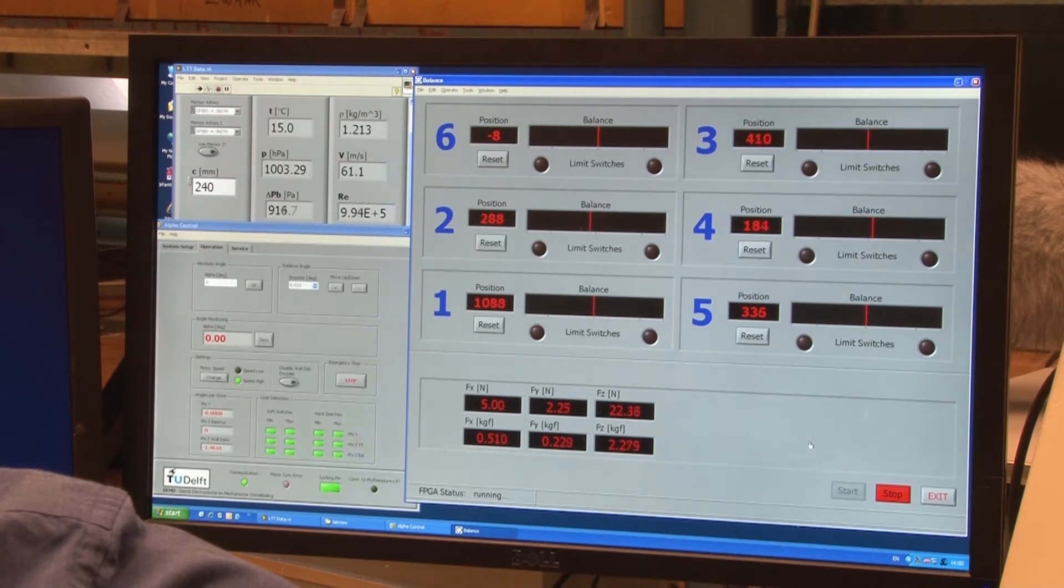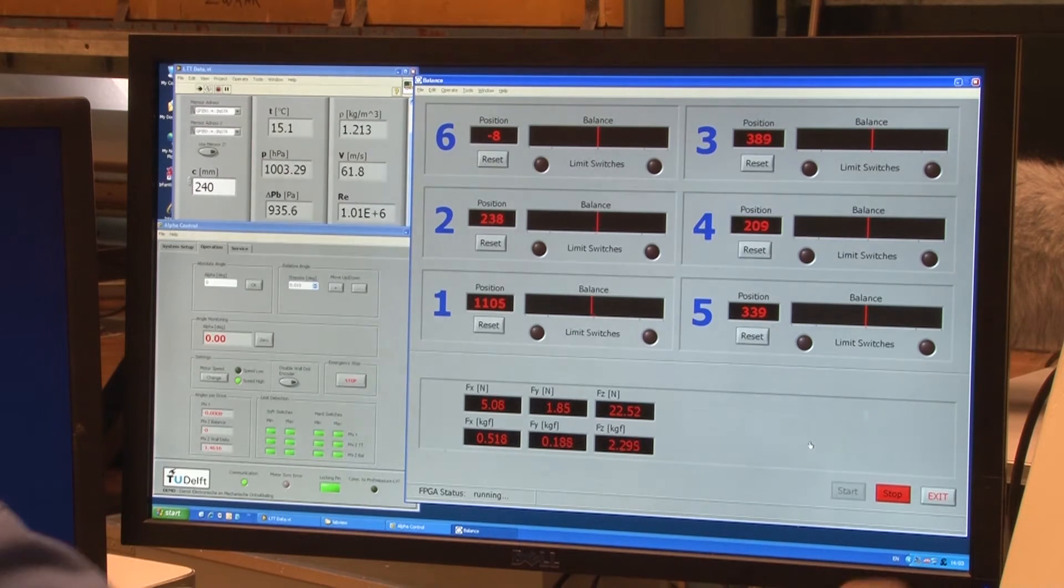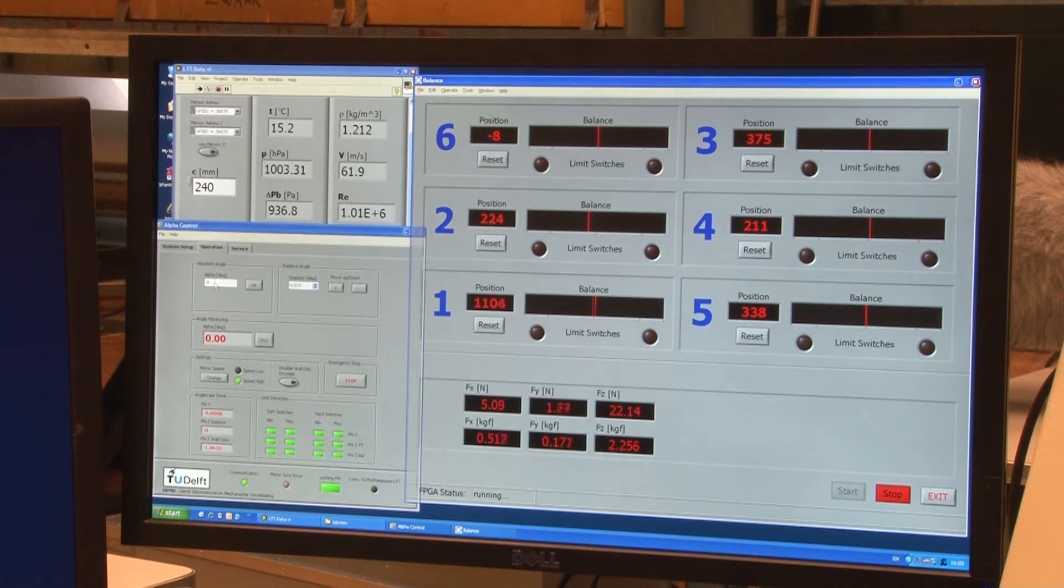For a Reynolds number of 1 million, we need a wind speed of about 62 meters per second. In the lower left corner, you can see the angle of attack settings. The right screen contains the six balances of the mechanical balance system. Now back to the oil flow pictures.